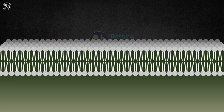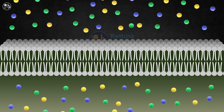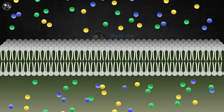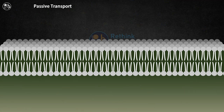Cells are the building blocks of life. They're responsible for the growth, repair and maintenance of our bodies. But how do the necessary molecules and substances get into and out of the cell? This process is called transport and there are two types of transport: active transport and passive transport.